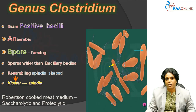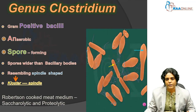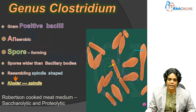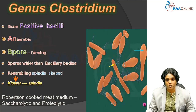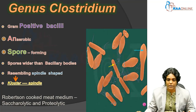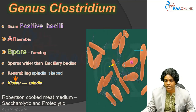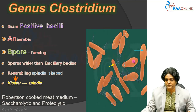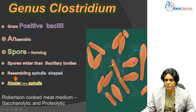Now coming to this genus Clostridium, it has got a few specific or significant characteristics. They are gram-positive bacilli, they are anaerobes, they form spores, and the spores will be wider when compared to that of the bacillary bodies. As you can see here, they produce bulging spores, and this gives the typical spindle shape.